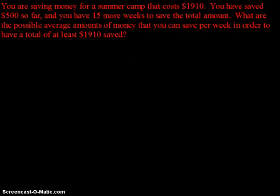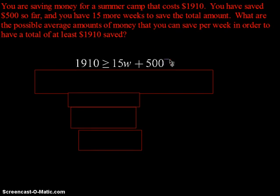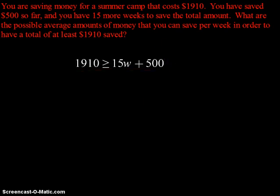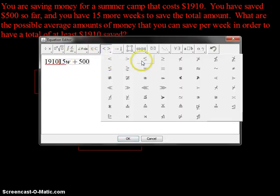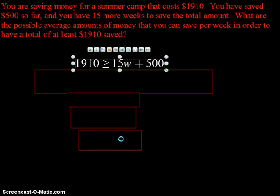All right. Let's see, this is what I came up with. Sorry, this video is not cooperating with me very much. I came up with $1,910. That is going to be greater than or equal to 15w plus 500. Actually, what I did here is I made a mistake. It should have been a less than or equal to sign because we know it's going to be at least 1910.